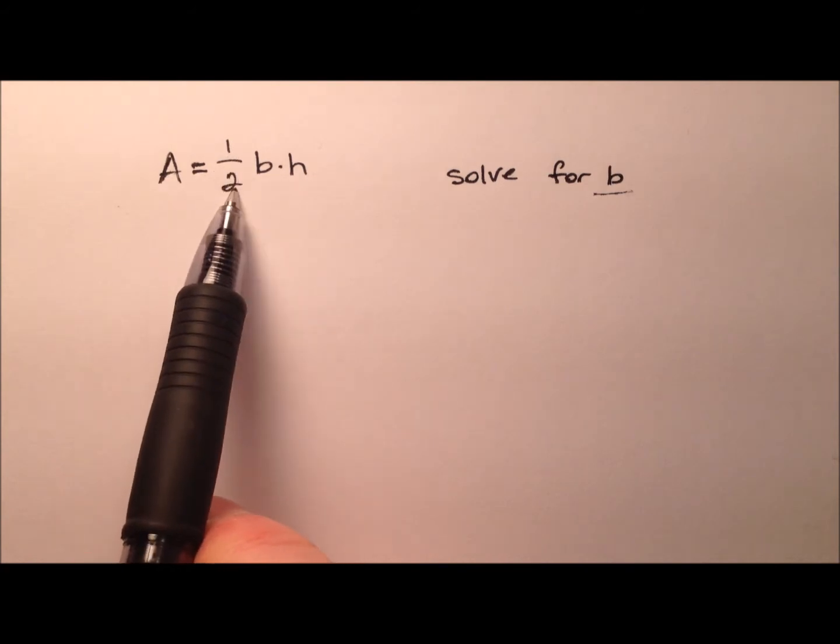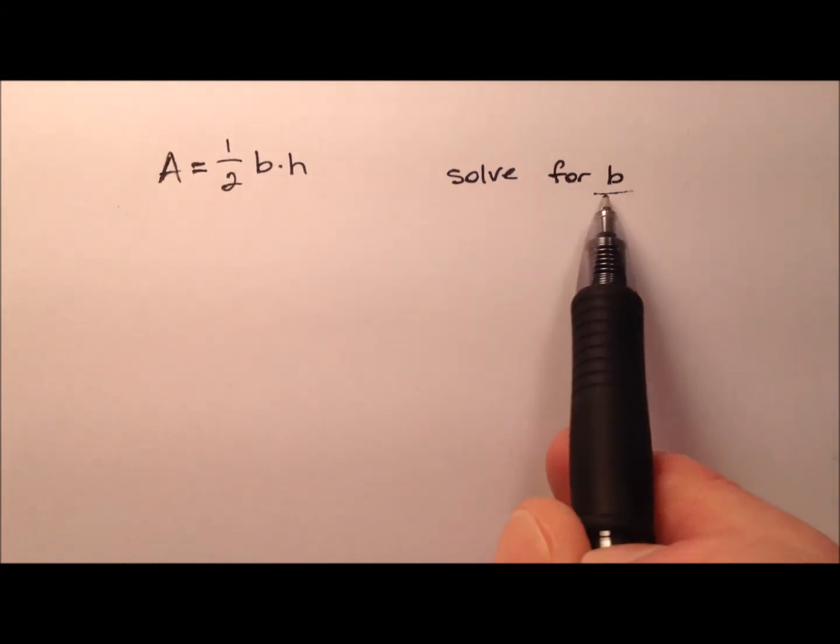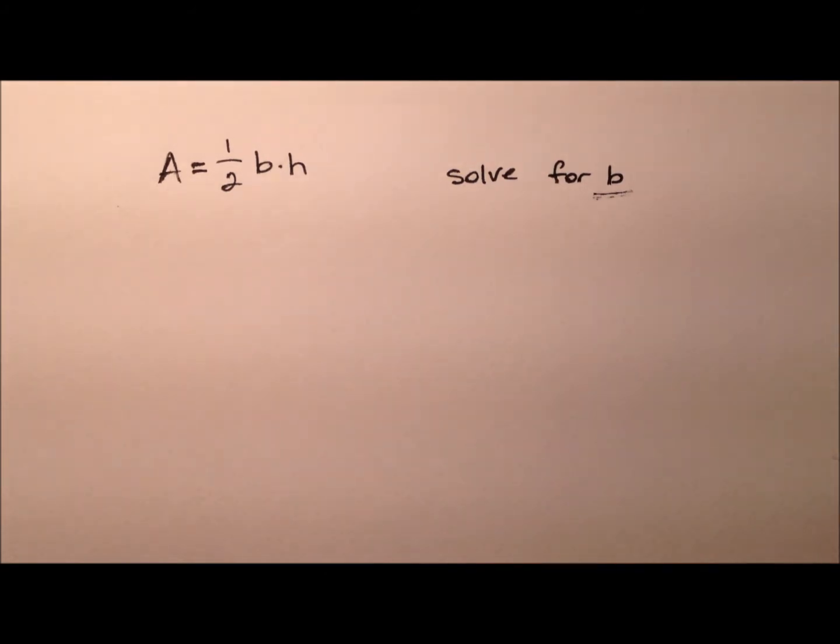The area equals half the base times the height, and we would like to solve for this variable b, or solve for the base.